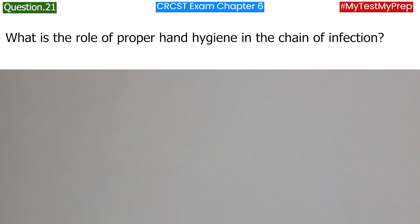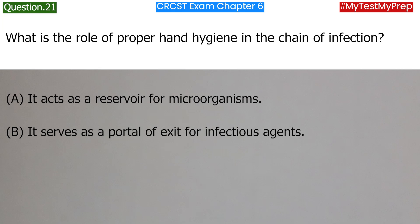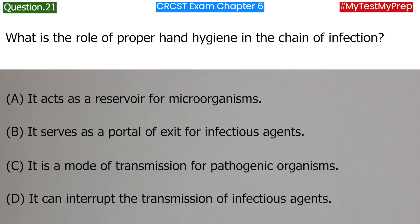What is the role of proper hand hygiene in the chain of infection? A. It acts as a reservoir for microorganisms. B. It serves as a portal of exit for infectious agents. C. It is a mode of transmission for pathogenic organisms. D. It can interrupt the transmission of infectious agents. Answer: D. It can interrupt the transmission of infectious agents.